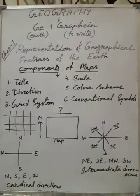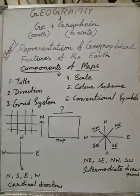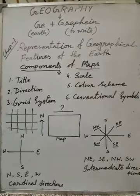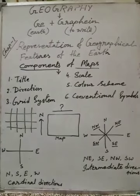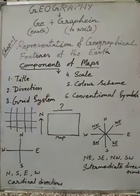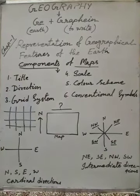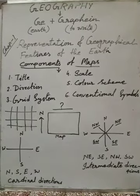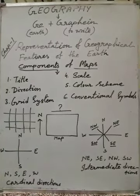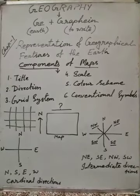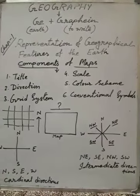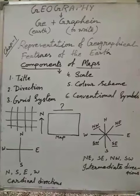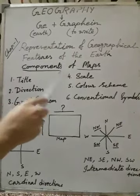Good morning students. Today I am going to discuss the last topic of our chapter — Chapter 1, Representation of Geographical Features of the Earth. And what was our last topic? Components of Maps. Before that, from this chapter, we have already learned the meaning of globe, map, their uses, their limitations, and different types of map. This is our second video, and here we will discuss the last part of this chapter, that is components of maps.